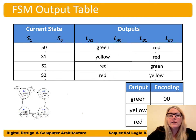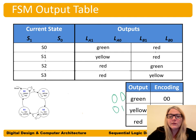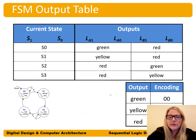Now we encode the outputs. With three possible values (green, yellow, red), we need at least two bits. We could use one-hot encoding giving each color its own wire (100, 010, 001), but for this example we'll use: green = 00, yellow = 01, red = 10. We replace all output values with these bit encodings to create the encoded output table.